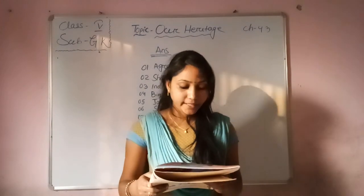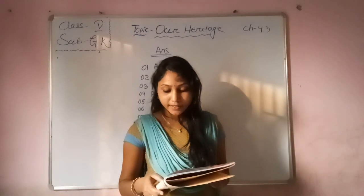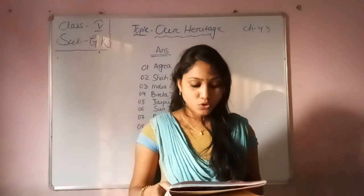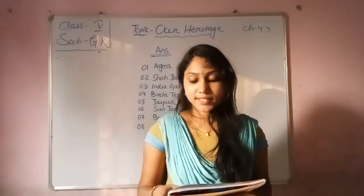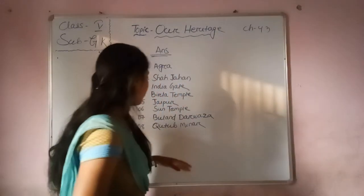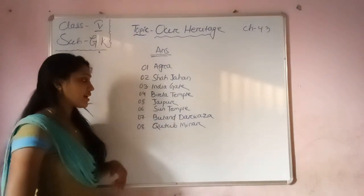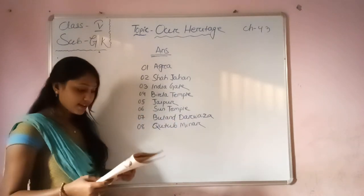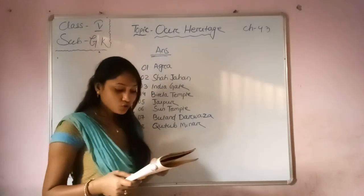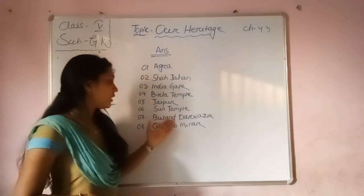Then, Fatehpur Sikri has two main entrances. One is the Buland Darwaza. Name the other. Another entrance is the Gulland Darwaza. So Fatehpur Sikri has two main entrances: Buland Darwaza and Gulland Darwaza.